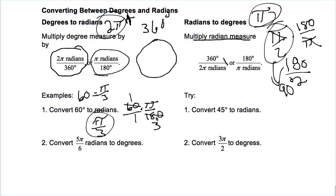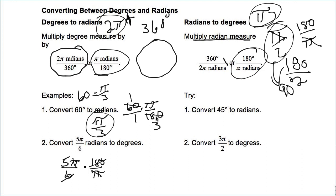Number two: convert 5π/6 radians to degrees. Take 5π/6 and multiply by 180/π. The pi symbols cancel out. 6 goes into 180 thirty times, so 5 × 30 = 150 degrees. 5π/6 radians equals 150 degrees.